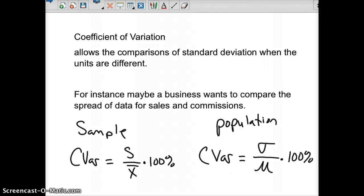All right, so the coefficient of variation - this is when you have two standard deviations that you want to compare. You want to compare how spread out data is for two different units. So when the units are different, we can compare the standard deviation of spread of the data.